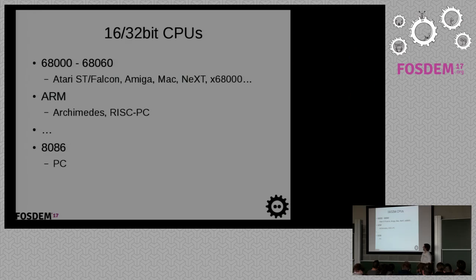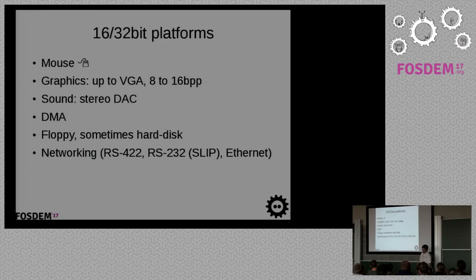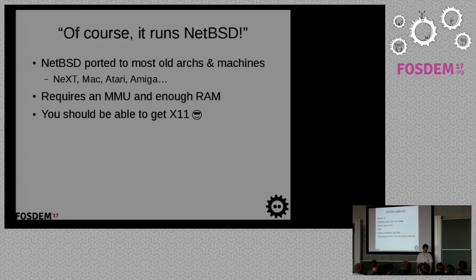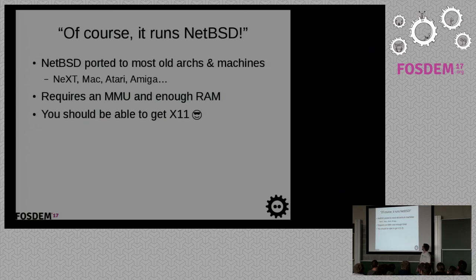ARM was born from Acorn — they created the CPU for their own machine, first the Archimedes, then the RISC PC, then many others, and the x86 for the PC. Those platforms were a bit better; most had a mouse and graphics up to VGA. Sometimes 256 colors, sometimes better. Usually floppy drives, and lucky people had a hard drive. Ethernet wasn't really a standard at the time. Of course they run NetBSD, because NetBSD has been ported to most architectures — even toasters, I've heard. You need an MMU and enough RAM.